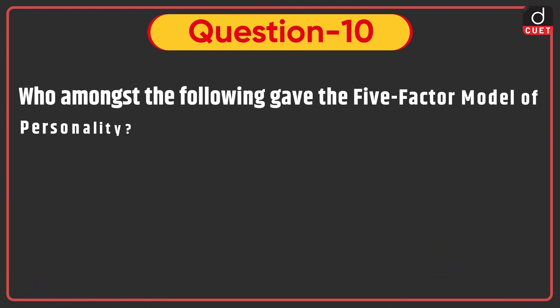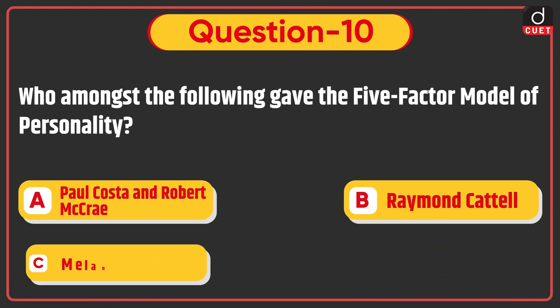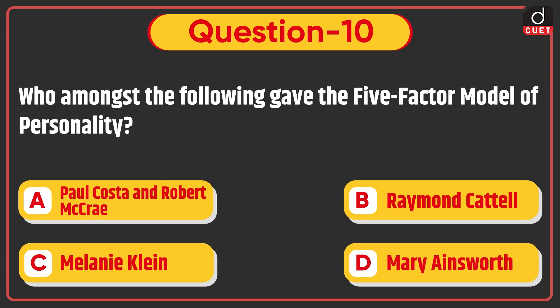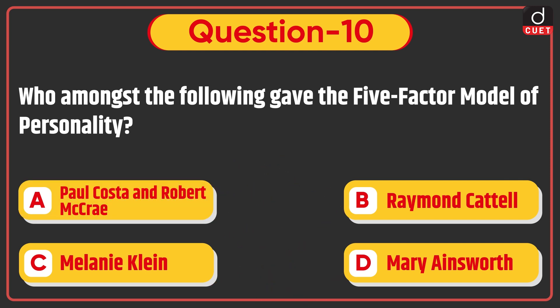Next question: who amongst the following gave the five-factor model of personality — Paul Costa and Robert McCrae, Raymond Cattell, Melanie Klein, or Mary Ainsworth? The correct answer is option A: Paul Costa and Robert McCrae.